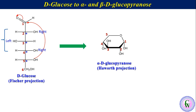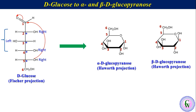Now consider the downmost chiral center, which is C5. Since OH is on the right, CH₂OH will be up. Similarly, we can make the Haworth projection formula of beta-D-glucopyranose, in which there is a difference in configuration only at C1. In the beta anomer, the OH will be up.